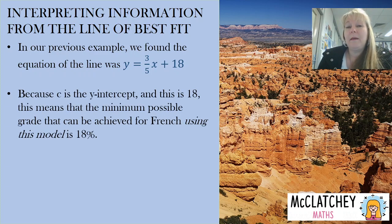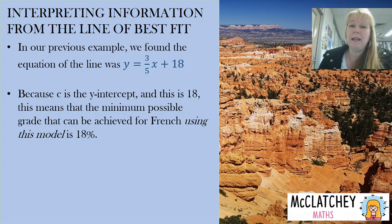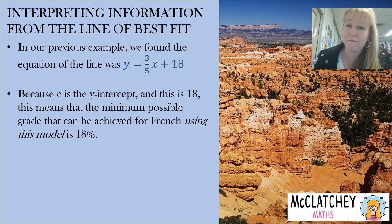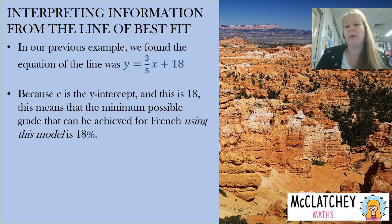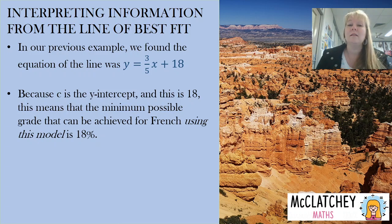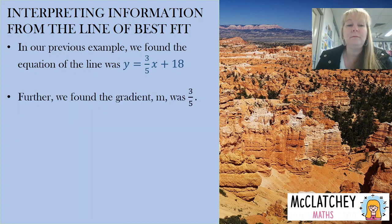Our y-intercept c is 18. In context, that tells us the minimum possible French grade achievable using this model is 18 — it's impossible for anyone to get less than 18 in French according to the model. This makes sense because once the line passes into negative x-values, that would mean a negative English grade, which isn't possible. So our minimum French grade is 18.